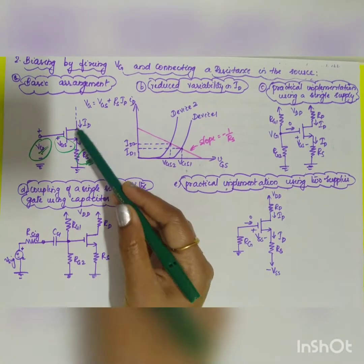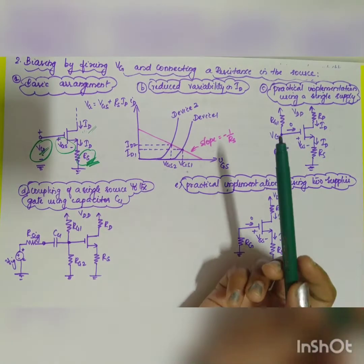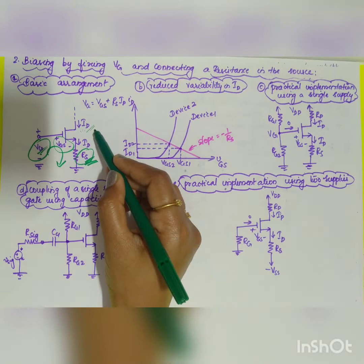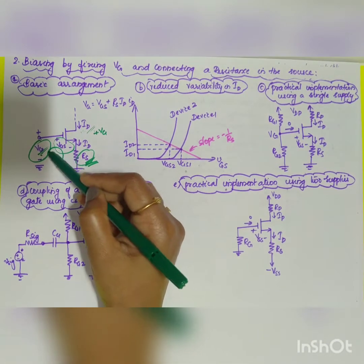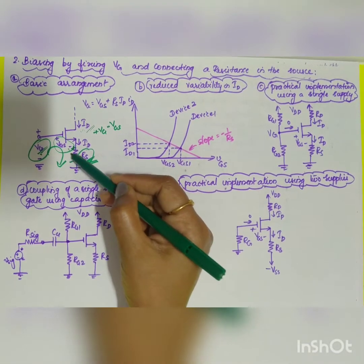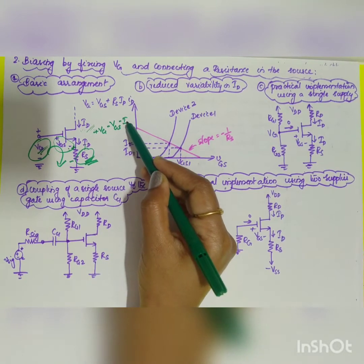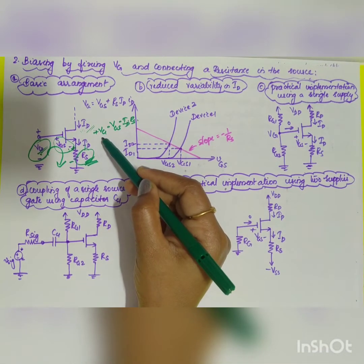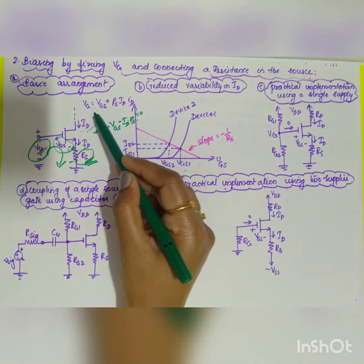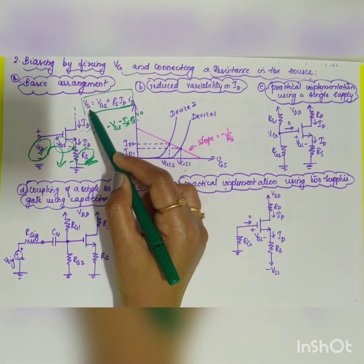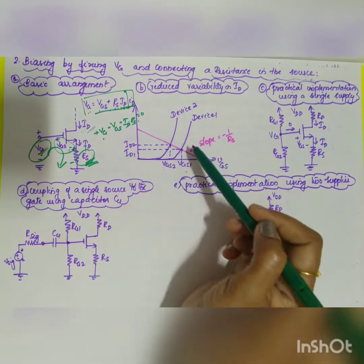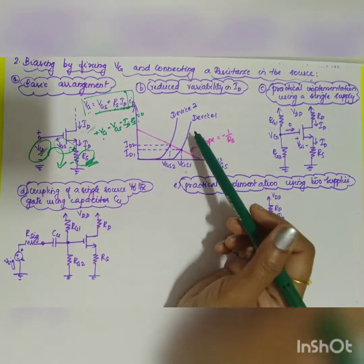Applying the loop equation: +VG − VGS − ID × RS = 0, which gives VG = VGS + RS × ID. Taking the same plot with two different devices, the variation of ID current is very small compared to the first type. The slope depends on −1/RS, which is one of the advantages of this configuration.